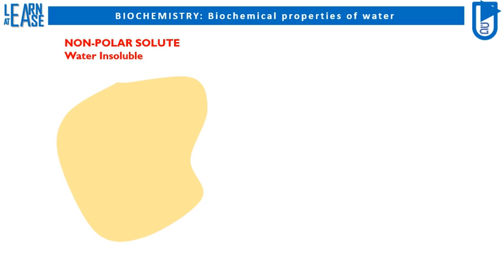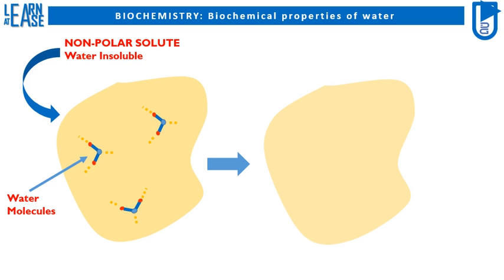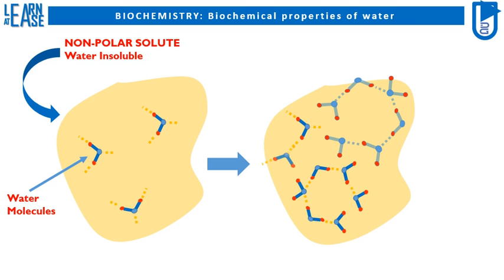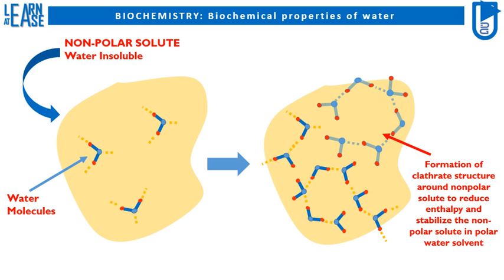The image shows that when a nonpolar compound is added in water, molecules of water will form a cage-like clathrate structure. This clathrate structure enables the nonpolar compound to form a droplet in water which will in turn allow nonpolar compound to occupy minimum area in water. Thus, clathrate structure formed by interaction of nonpolar compound and water molecules allows nonpolar compound to occupy minimum space in water, which stabilizes enthalpy.